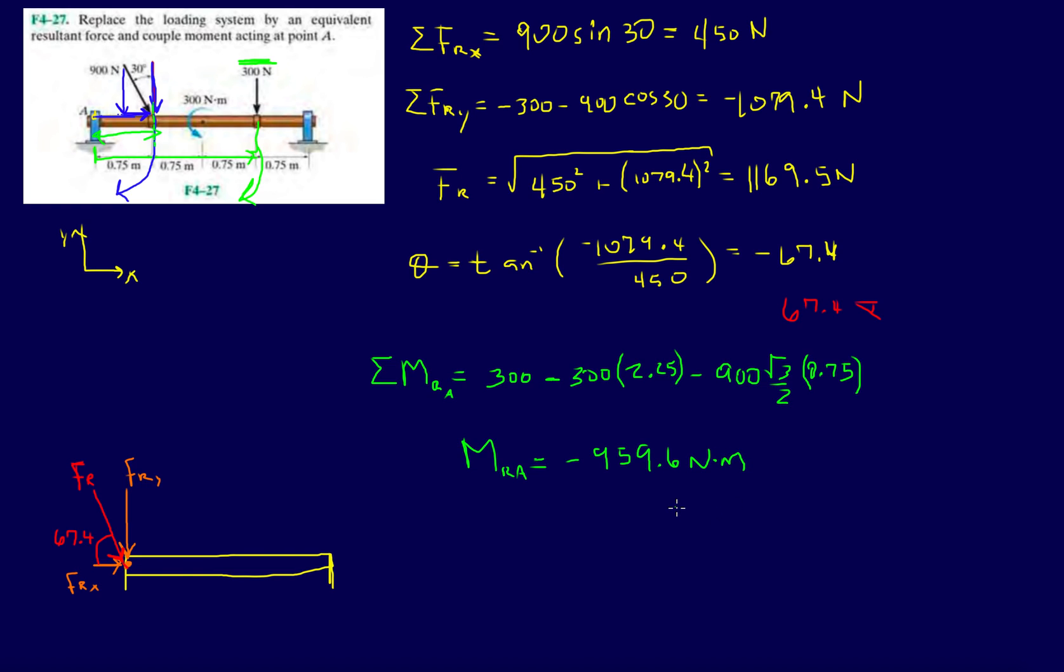Summing everything up, we have 900 times 0.75 plus 300 minus 300 times 2.25, that's minus 959.6 Newton-meters. So this is going to be clockwise.